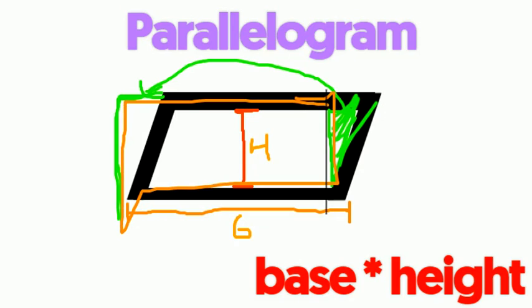The base and height have stayed the same. The area formula for a rectangle, base times height, is the same as the area formula for a parallelogram.